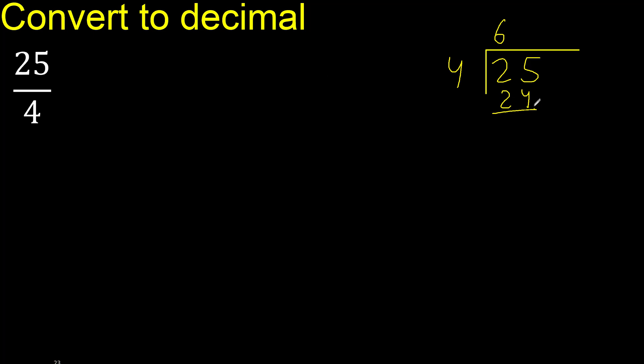25 minus 24 is 1. Next, there is no number, therefore complete.